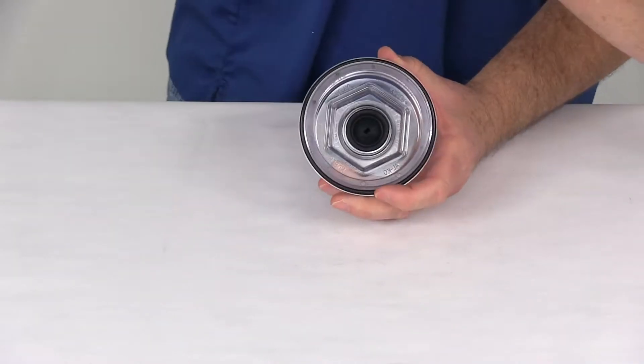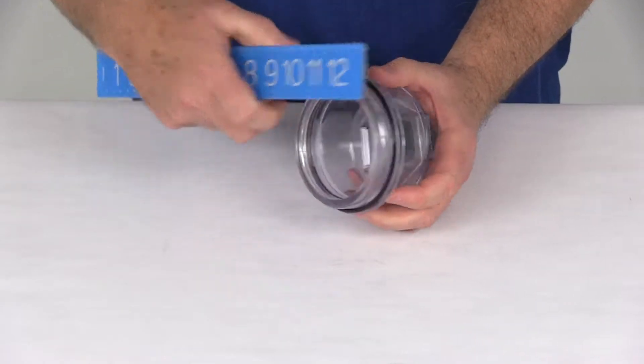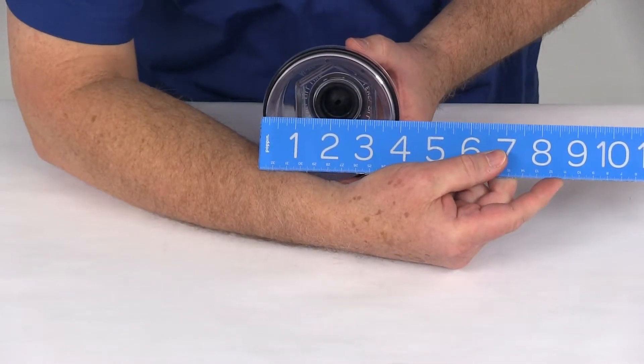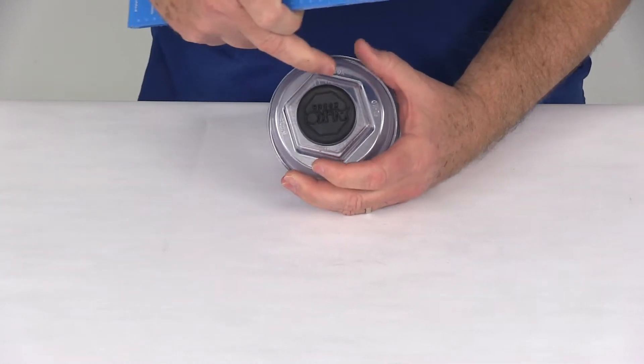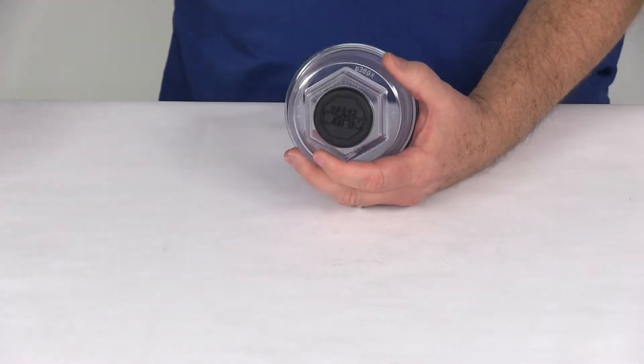A few dimensions on this. On the thread portion that threads into the hub, the overall diameter is going to be right at three and three quarter inches. The socket size does require either a two and a quarter inch socket or wrench for installation.